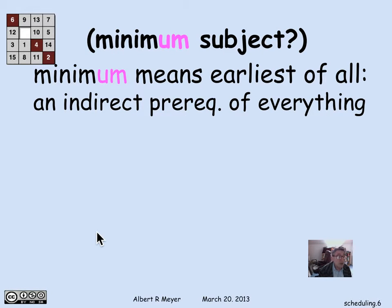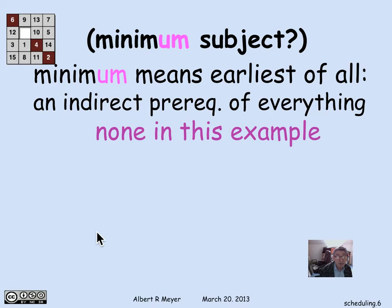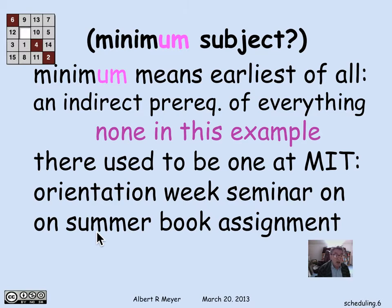Now, you could ask what's a minimum, which maybe you're more familiar with. A minimum means that not only is there nothing before it, but it comes before everything else. It would be the earliest of all possible subjects in the indirect prerequisite chain. There isn't any in this example, but there actually used to be one at MIT. For a while, we experimented with giving an orientation week summer assignment. That is an assignment over the summer for newly admitted students in order for them to take a subject during orientation week, in which they discussed some book that they had all been assigned to read beforehand. It seemed like a great idea to kind of pull the freshman community together. But it turned out to be unsustainable, because they couldn't find enough faculty and others willing to conduct these seminars. So MIT stopped having a minimum subject.